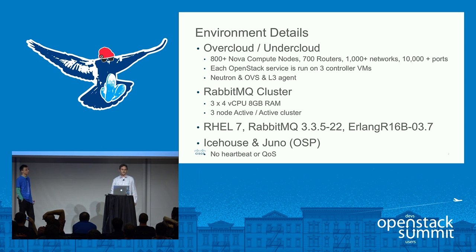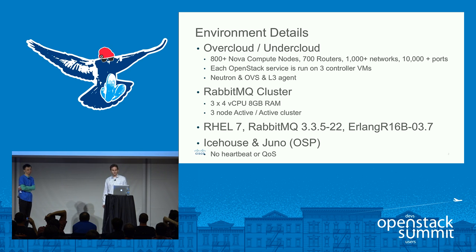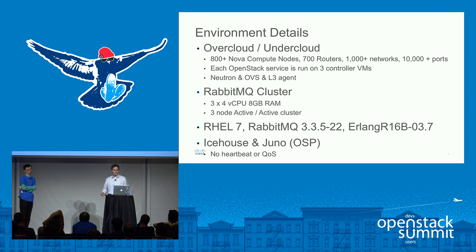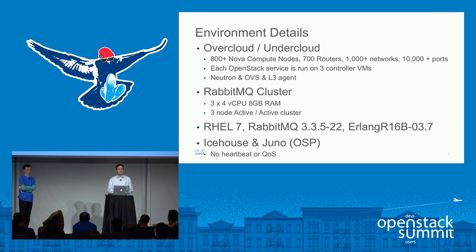Each OpenStack service we run inside of the tenant cloud runs on three controller VMs, and we're supporting Neutron, OVS, and L3 Agent. Our RabbitMQ cluster consists of four vCPU, eight gigabyte of RAM, and we run these in an active-active cluster. We're not running HAProxy or Pacemaker in front of the Rabbit node — all clients are directly connecting to Rabbit itself. We're running this on Red Hat 7 with RabbitMQ 3.3.5-22 and Erlang 16.